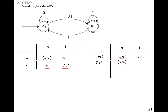For 0, the combined state Q0Q1 goes to Q0Q1. For 1 applied to Q0Q1: processing Q0 gives phi, and processing Q1 gives Q0Q1, so for 1 it will go to Q0Q1.